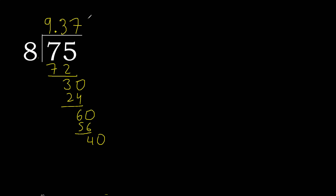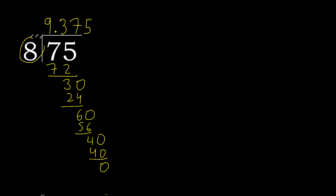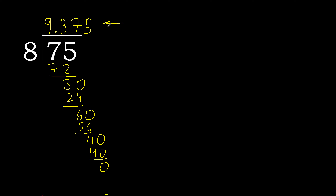8 multiplied by 5 is 40. 40 minus 40 is 0. Therefore finished — 75 divided by 8 is 9.375.